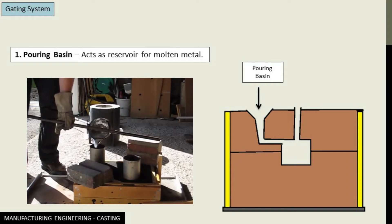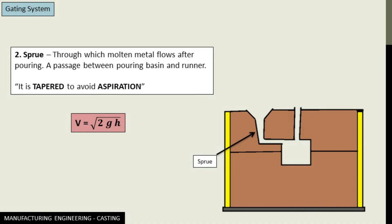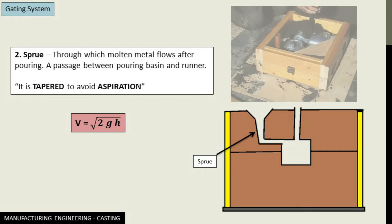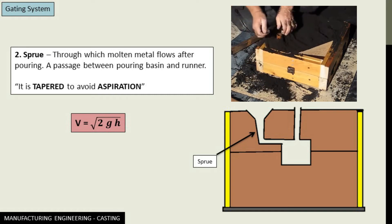Next we have the sprue. It is that casting element through which molten metal flows after pouring. If you can see clearly here, it is tapered. It is not straight.